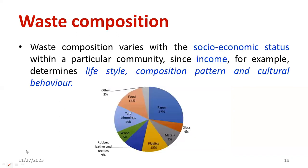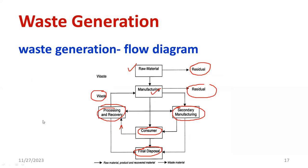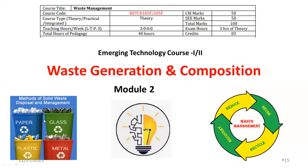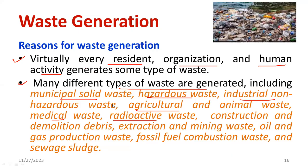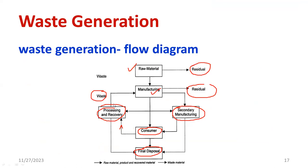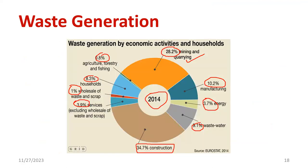Regarding waste generation, these are the main things you need to remember — where and how waste is produced. From the block diagram, it is very clear that waste is generated at each and every stage of the waste management system. The construction field dominates; with numerous constructions taking place, there is a heavy amount of concrete pieces, blocks, and cement, which is considered a huge waste.